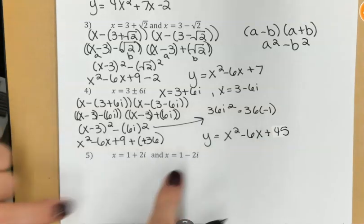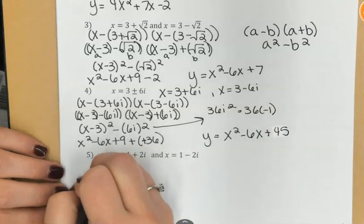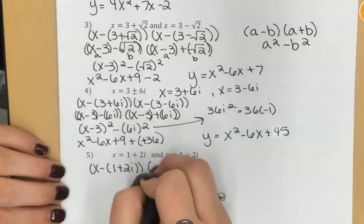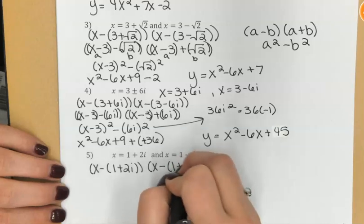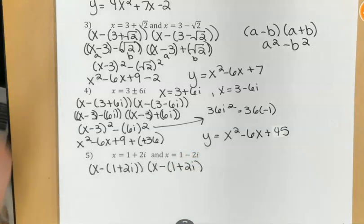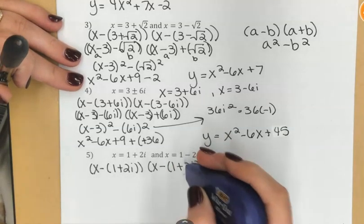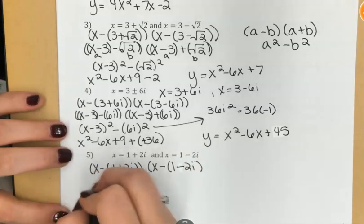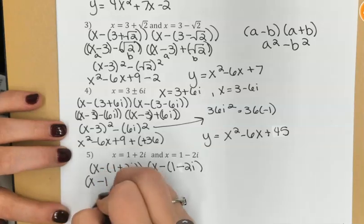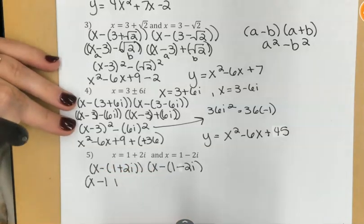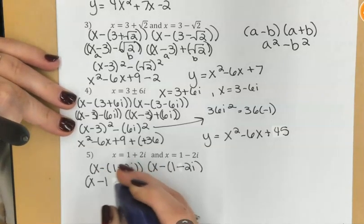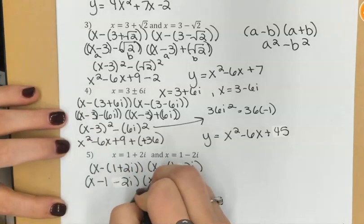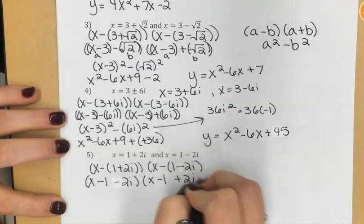Last one, and it happens to be imaginary again. It's already split up for us, x minus 1 plus 2i, and x minus 1 minus 2i. Again, distributing that negative, x minus 1 minus 2i, x minus 1 plus 2i.